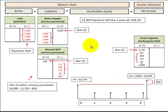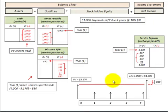Then we'll come back here and look at the detail on the journal entries. But first let's go and show how to do the mechanics for determining interest expense and the present value.